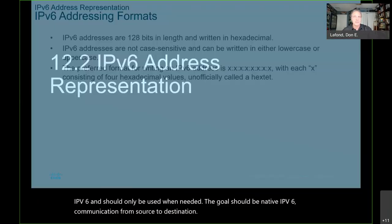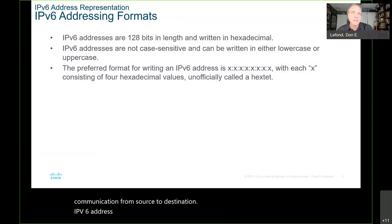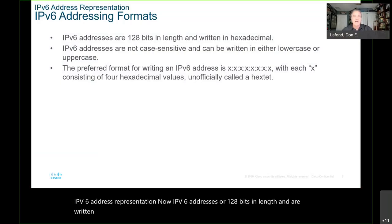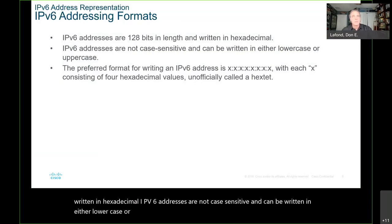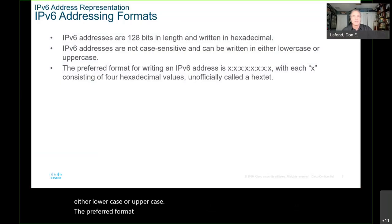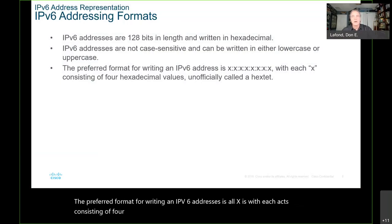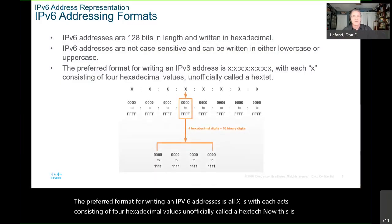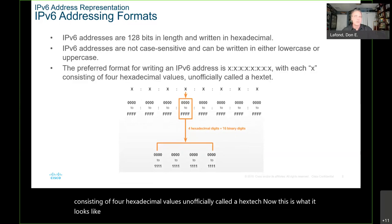IPv6 address representation. IPv6 addresses are 128 bits in length and are written in hexadecimal. IPv6 addresses are not case sensitive and can be written in either lowercase or uppercase. The preferred format for writing an IPv6 address is all X's, with each X consisting of four hexadecimal values, unofficially called a hex tet.